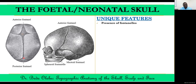Other than the anterior fontanel, we have the posterior fontanel, which becomes the lambda. We have the anterolateral fontanel, also known as the sphenoidal fontanel, which becomes the pterion. And the mastoid fontanel, also called the posterolateral fontanel, which becomes the asterion. The sphenoidal and mastoid fontanels are paired, while the anterior and posterior fontanels are midline. Take time to check at what point each fontanel closes, as they close at different timings.